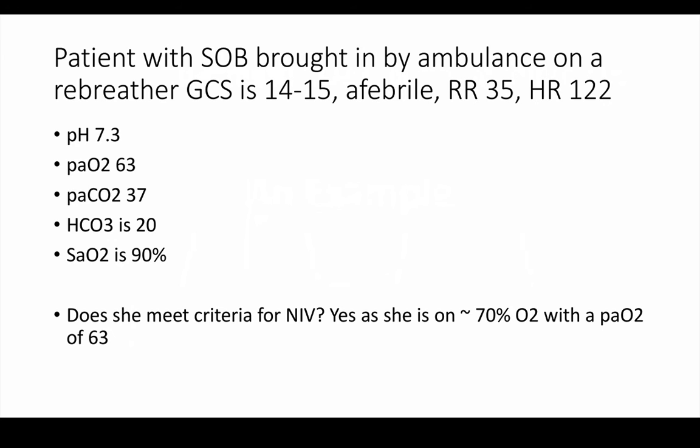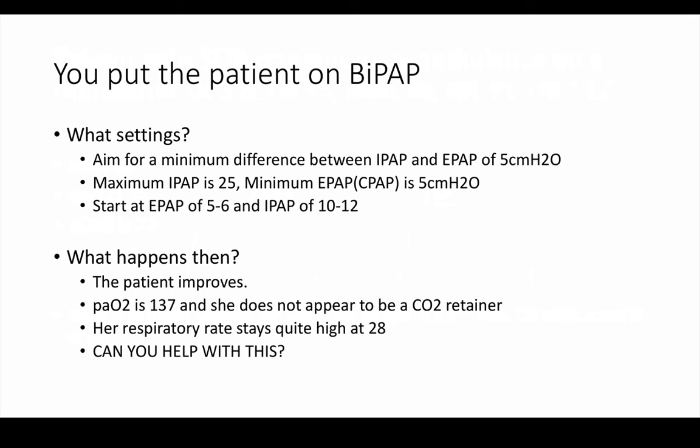Here's an example. We've got a patient that comes in with shortness of breath. They're on a rebreather. GCS is pretty good. They're afebrile. The respiratory rate is 35 — quite high — and the heart rate is 122. They have a pH that's not too bad. Their PaO2 is 63, and this is on a rebreather — so about 70% O2 — and they're mounting a PaO2 of only 63. The CO2 is 37, which is not too bad, and bicarb is a bit low, so there's some metabolic acidosis going on. Their SaO2 is 90%. This patient meets the criteria for non-invasive ventilation because she's on about 70% O2 to bring the PaO2 to only 63.